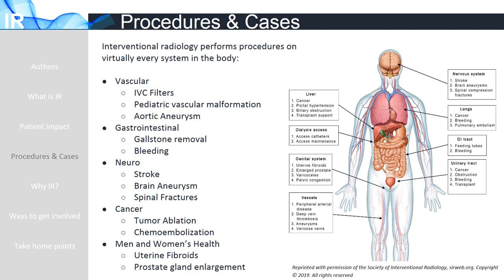IR performs procedures covering virtually every organ in the body. In this presentation, we will be learning about some of the common procedures that IR does, as well as discussing real cases for these procedures. IR does cases on the vascular system, such as placing filters that prevent clots from reaching the lungs, treating malformations of the vascular system, and curing aneurysms of the aorta. In the gastrointestinal system, IR can remove gallstones and treat bleeds. From a neuro standpoint, IR can treat strokes, brain aneurysms, and fractures of the spine. IR can also treat cancer by freezing or burning tumors, or injecting drugs that can destroy the tumors. Finally, IR can treat uterine fibroids or enlarged prostate glands.